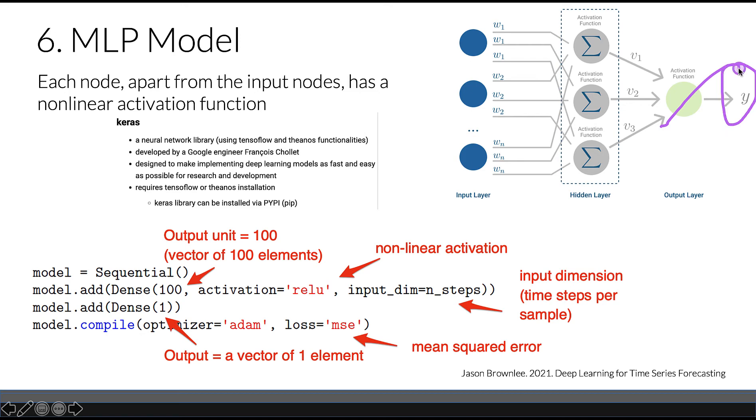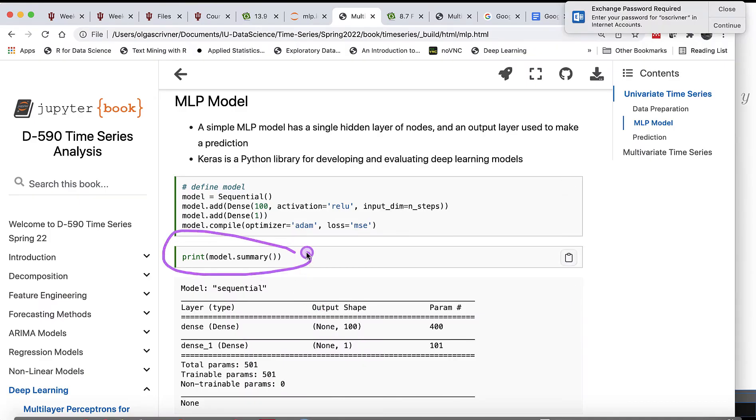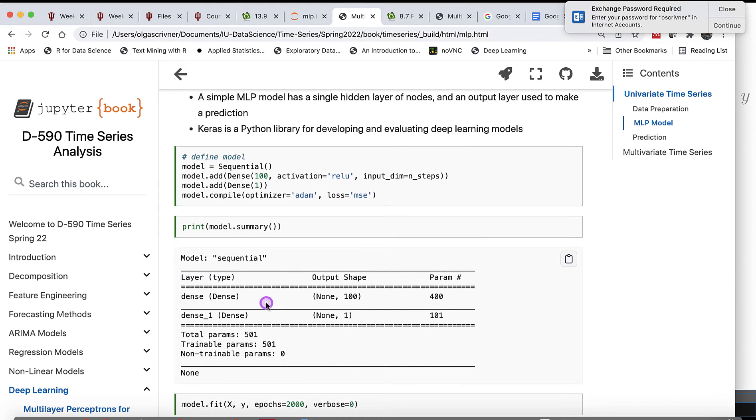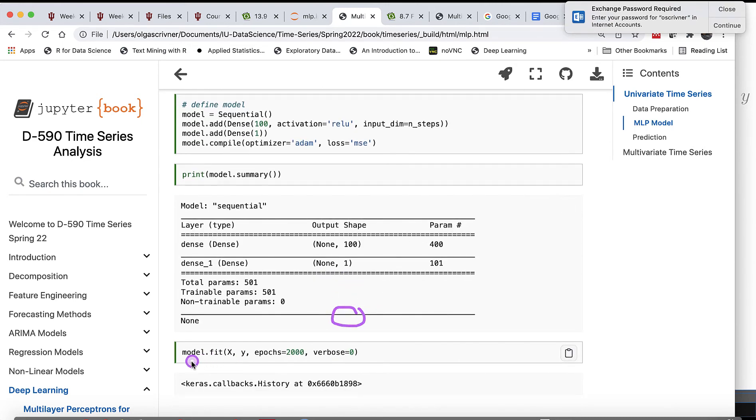We add another dense layer with output one, as we're interested in prediction with one value. Finally, we compile our model using a specific optimizer. There are several optimizers; in this case it's Adam. And we're using mean squared error loss function. We can also print model summary. We have two dense layers and we see the shape of our layer that was specified.